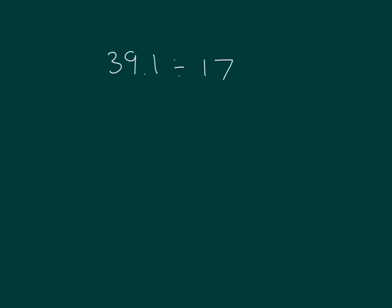39.1 divided by 17. What we'll do is go ahead and estimate. We'll round the divisor first, and rounding the divisor, we get 20. Let's record our estimation. Something divided by 20.